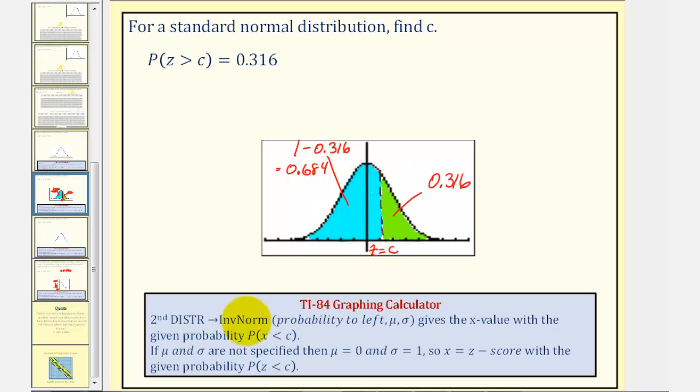When using the inverse norm command, we know the probability to the left, comma, the mean, comma, the standard deviation. But in our case, since we're looking for a Z-score, we can leave off the mean and standard deviation. If we leave these off, then mu equals 0 and sigma equals 1, and therefore it returns the Z-score with the given probability, the probability of Z being less than C.